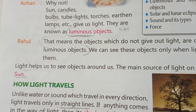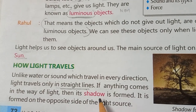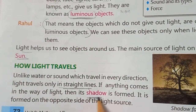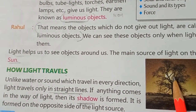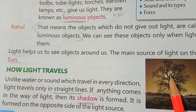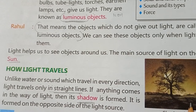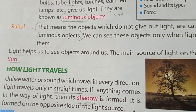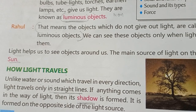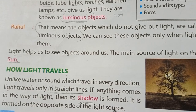If anything comes in the way of light, then its shadow is formed. For example, if we light a torch and put our hand in front of it, the light is blocked. Shadow is always formed on the opposite side of the light source.